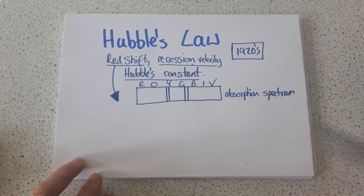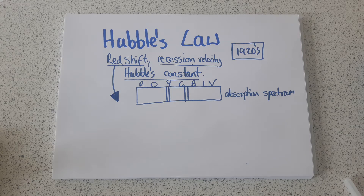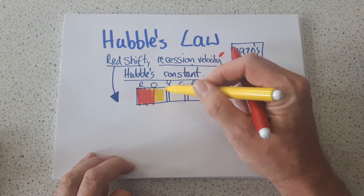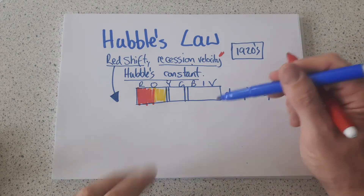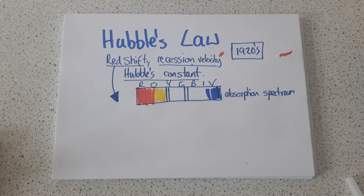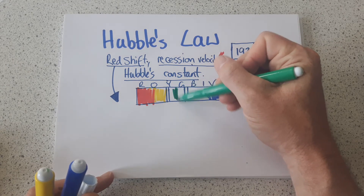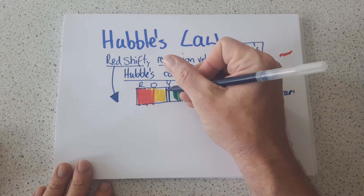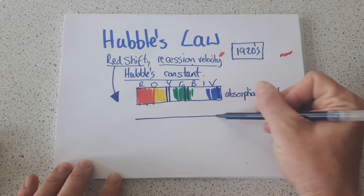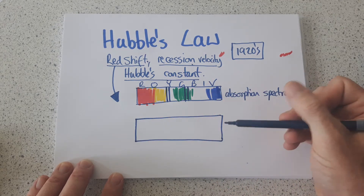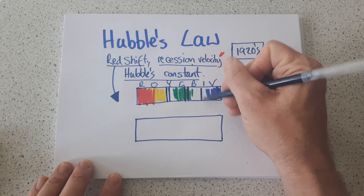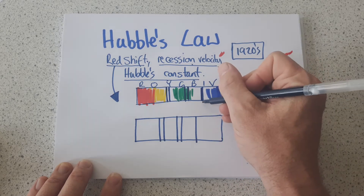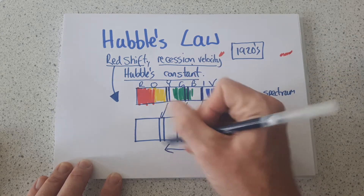I've already drawn out here an absorption spectrum, such that when you see the light from a star — from red into orange, green, and so on all the way down to blue — imprinted upon the spectrum are some dark lines. When Hubble observed different galaxies, what he found was that the light from those galaxies and their associated absorption spectrum lines were shifted towards the red end of the spectrum.